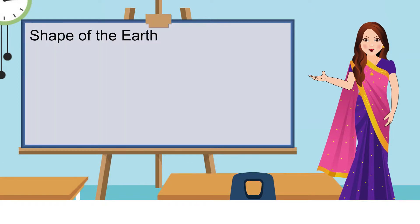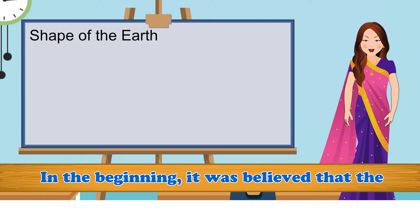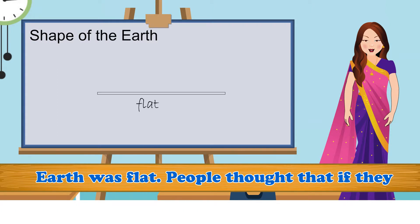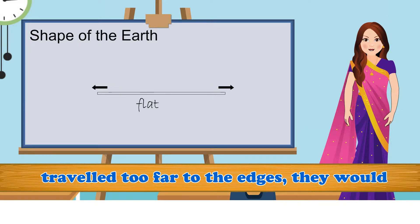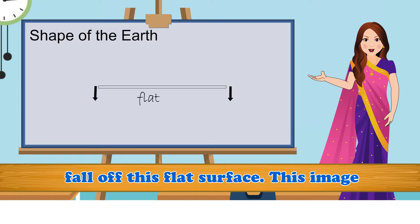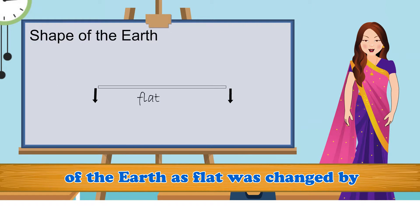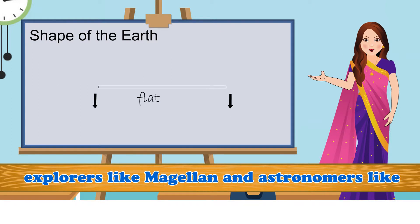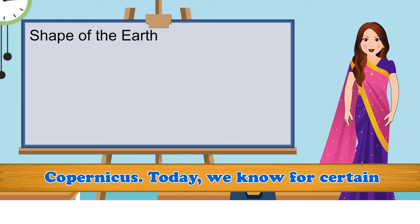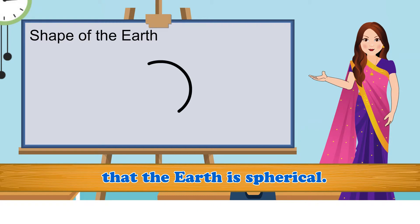Shape of the Earth: In the beginning, it was believed that the Earth was flat. People thought that if they travelled too far to the edges, they would fall off this flat surface. This image of the Earth as flat was changed by explorers like Magellan and astronomers like Copernicus. Today, we know for certain that the Earth is spherical.